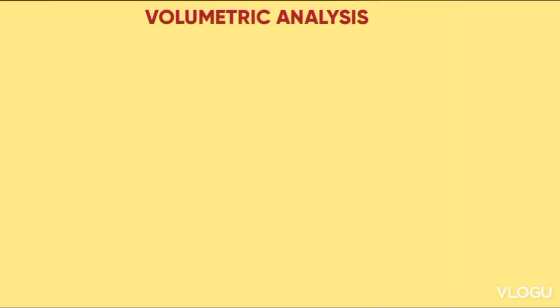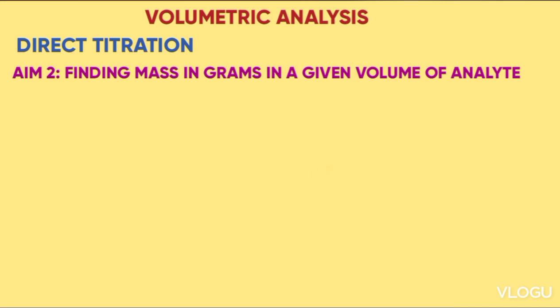Today we will look at the continuation of the previous lesson, where we are looking at the aims of direct titration. Today we look at the second aim, that is finding mass in grams in a given volume of analyte.